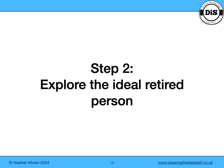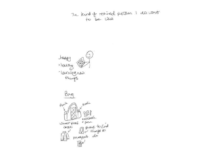Now we're going to do step two, which is to explore the ideal retired person — the kind of retired person I do want to be like, who is happy, healthy and learning new things. In the drawing, it's a person who's got a calendar with lots of things to do written on it. She's got a bag that seems to be very purposeful, which has a flask and a book, a notebook and pen, a waterproof coat, a phone to find things to do and a passport. And it's a rucksack so she can carry a lot of things.